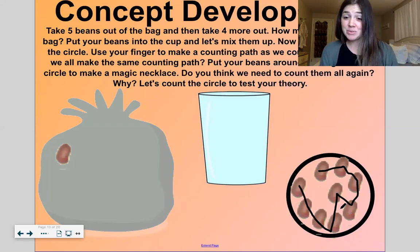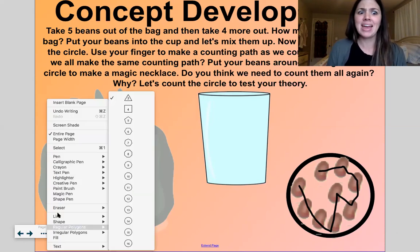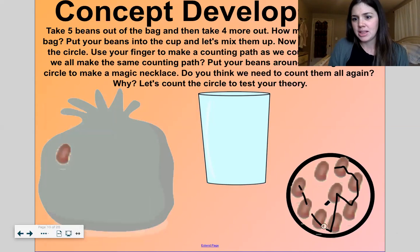There is my counting path. So you can see when I connect it like this with a line, it shows me for sure which ones I counted and I can look back at this line and see I didn't skip any of them. Right? Okay, I'm gonna erase my line here now.